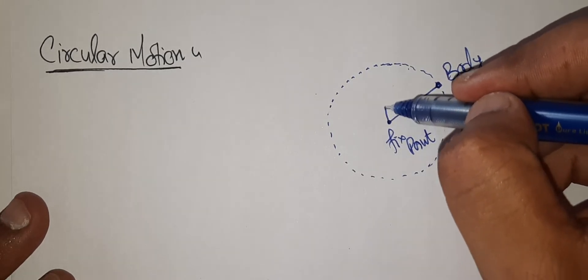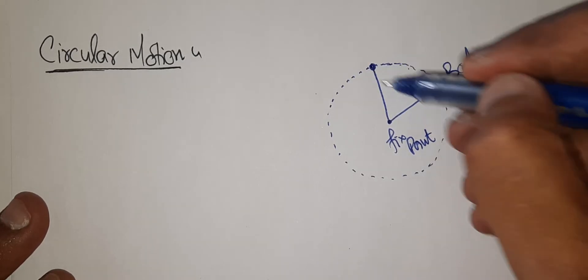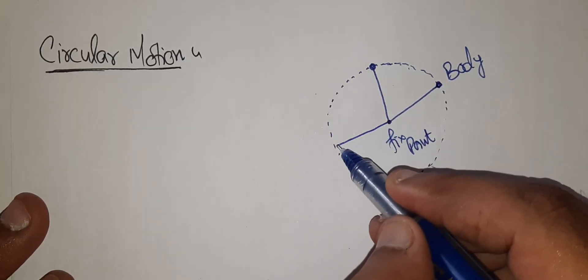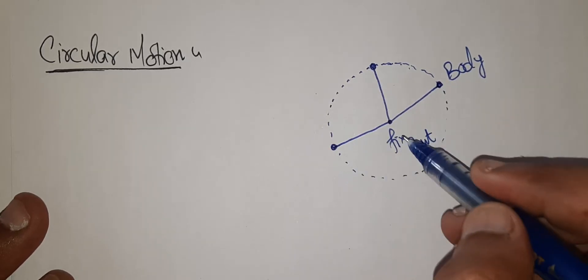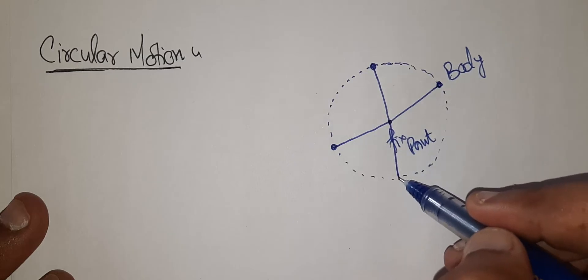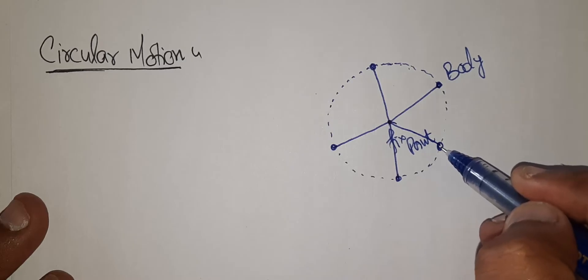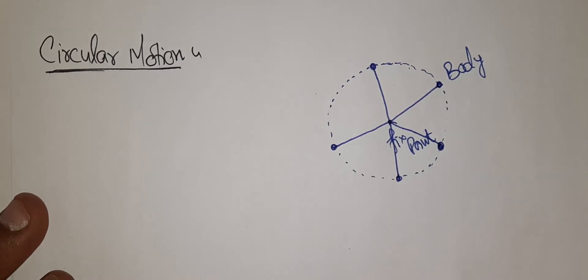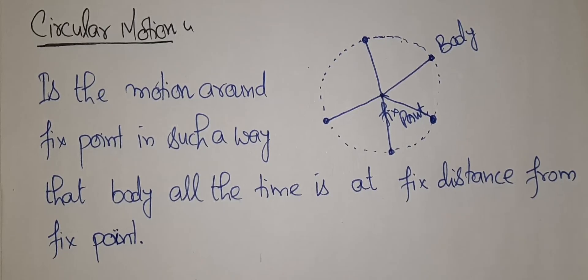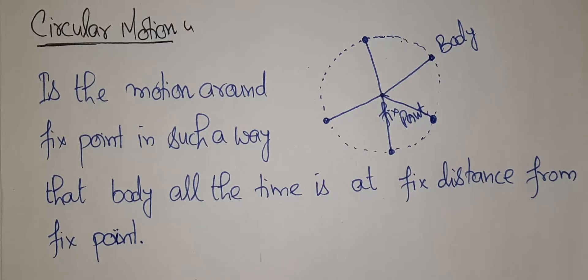This fixed point is called the center of the circular path, and the fixed distance is called the radius. This is something we have already discussed when we started with mechanics.